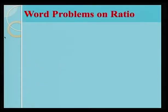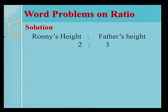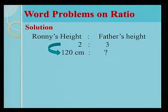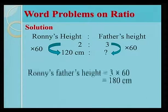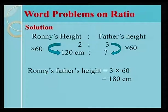We now look at the solution. Ronnie's height is to his father's height is 2 is to 3. Ronnie's height is 120 cm. We need now to find his father's height. We have multiplied 2 by 60 to obtain Ronnie's height. Ronnie's father's height which is 180 cm.